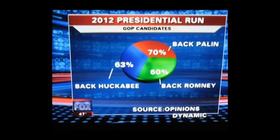Another example is a pie chart asking who people back in the 2012 presidential run among Republican candidates. 63 percent back Huckabee, 70 percent back Palin, 60 percent back Romney — completely misleading in the sense that you're polling whether someone would back a candidate, and obviously people can support more than one. The idea that any of these candidates have that level of support is just false and misleading.